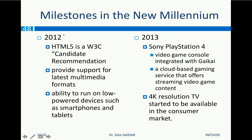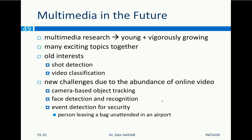In 2010, Netflix migrated from a DVD rental service to Amazon AWS cloud computing. Master copies of digital films from movie studios are stored on Amazon S3; each film is encoded into over 50 different versions based on video resolution, audio quality, and language, with more than one petabyte of data on the cloud. Also in 2010, the Microsoft Kinect — a horizontal bar with full-body 3D motion capture, facial recognition, and voice recognition — was released for Xbox 360. In 2012, HTML5 became a W3C candidate recommendation, providing support for the latest multimedia formats and the ability to run on low-power devices like smartphones. In 2013, Sony PlayStation 4 integrated with a cloud-based gaming service, and 4K resolution TVs became available in the consumer market.